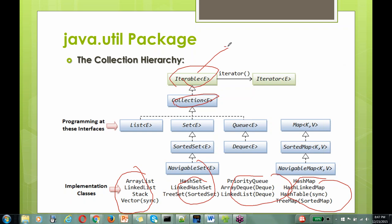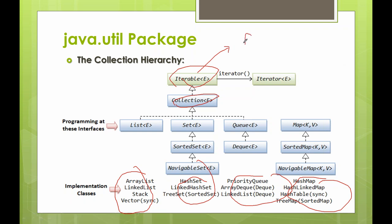Collection extends the iterable interface, which means you have a new version of the for loop where you can iterate each and every object. Any object that you want to iterate using an iterator must implement iterable interface. Since collection interface extends iterable, all objects that are part of your collection framework are iterable through the enhanced for loop — you need not loop through using an index.